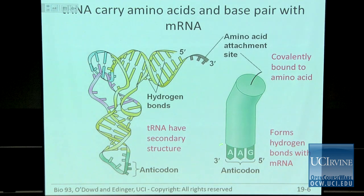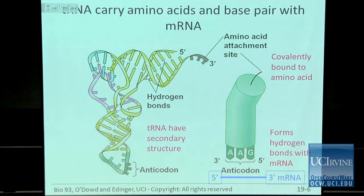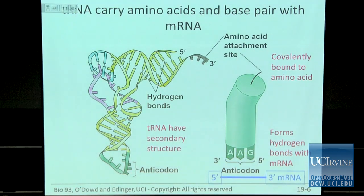The tRNA has an anticodon that will base pair with the mRNA in an antiparallel fashion. The codon that would base pair with the anticodon shown would be UUC — and that's what you would find in the table of the genetic code.